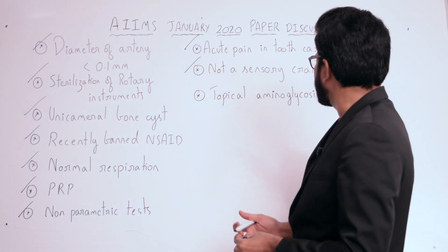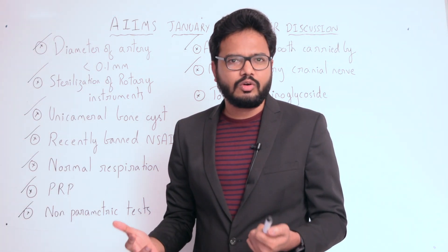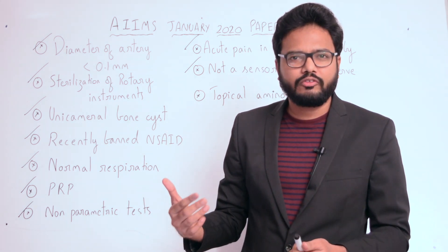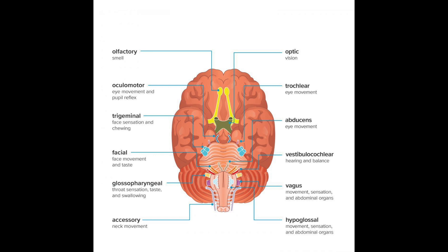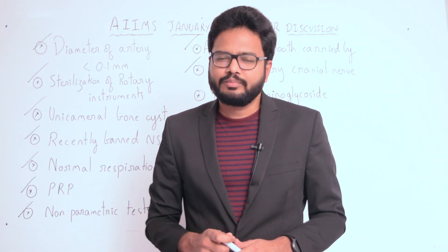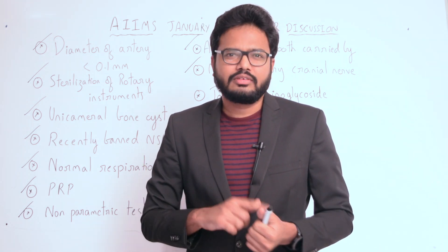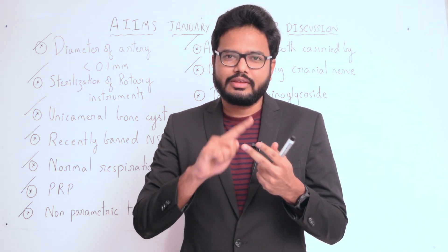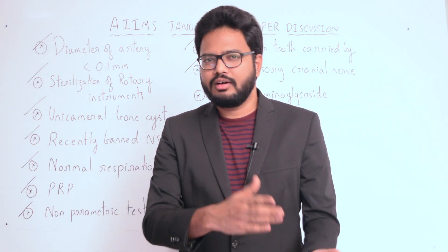Regarding cranial nerves and their classification as sensory, motor, or mixed: we have 12 pairs of cranial nerves — olfactory, optic, oculomotor, trochlear, trigeminal, abducens, facial, vestibulocochlear, glossopharyngeal, vagus, accessory, and hypoglossal. Their types are: sensory, sensory, motor, motor, mixed, motor, mixed, sensory, mixed, mixed, mixed, motor, motor.